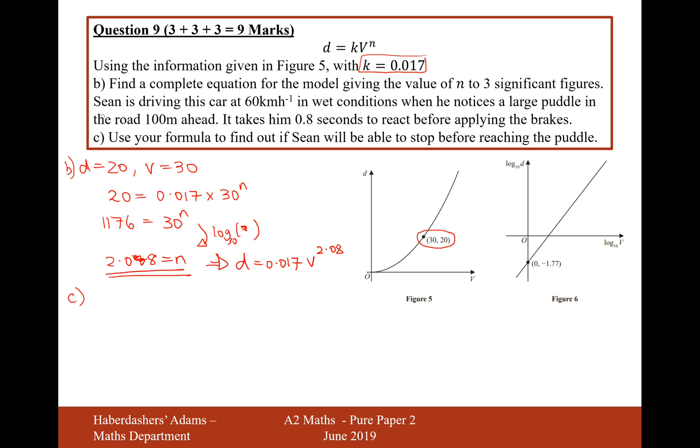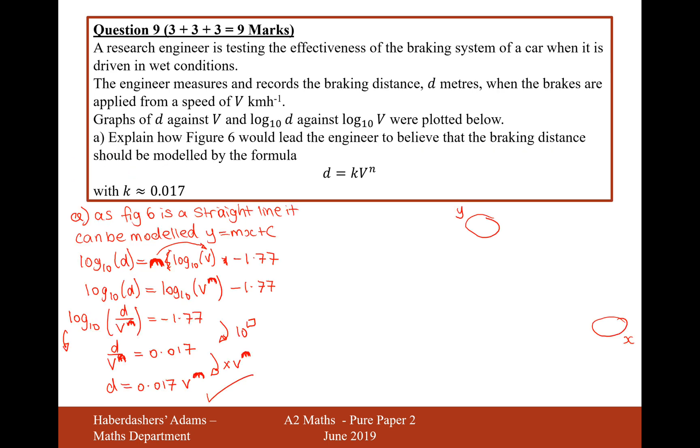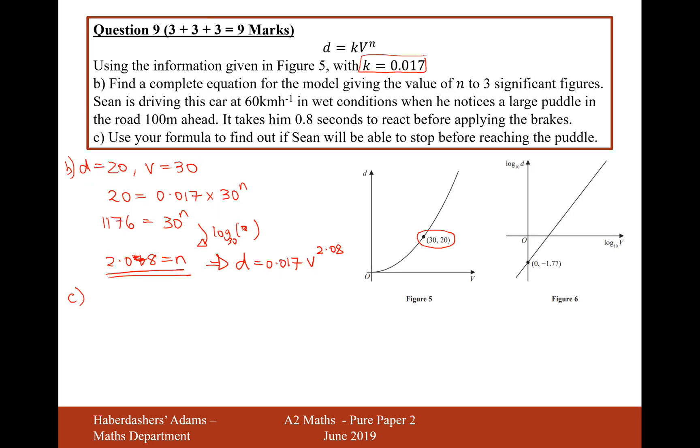Sean is driving a car at 60 kilometers per hour in wet conditions when he notices a large puddle in the middle of the road 100 meters ahead. It takes him 0.8 seconds to react before he applies the brakes. Use the formula to find if Sean will be able to stop before reaching the puddle. So v in this question is going to equal 60.